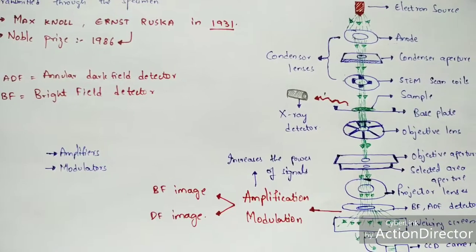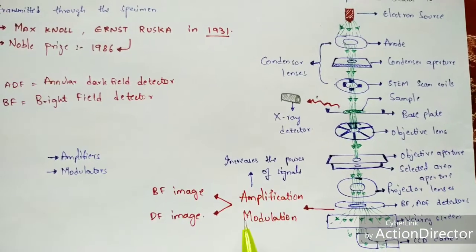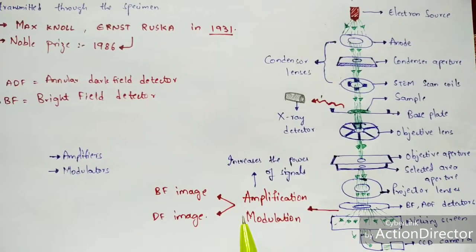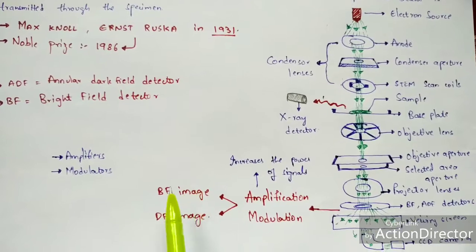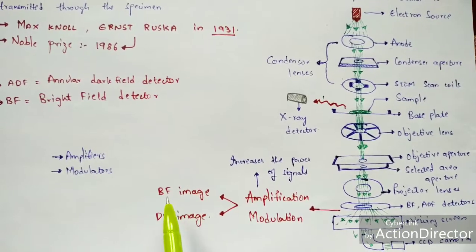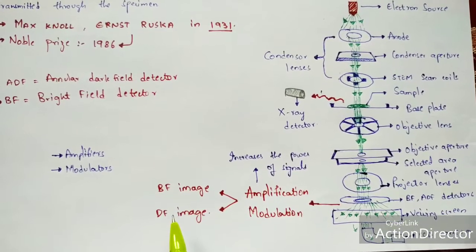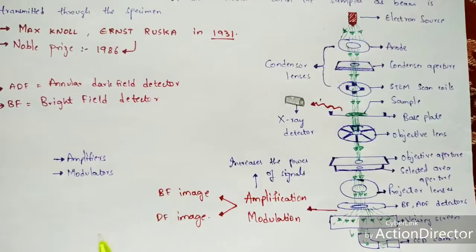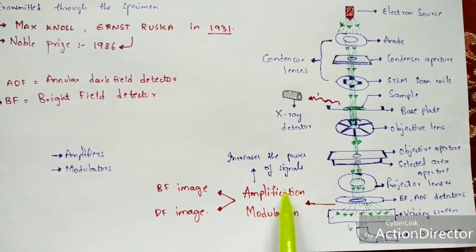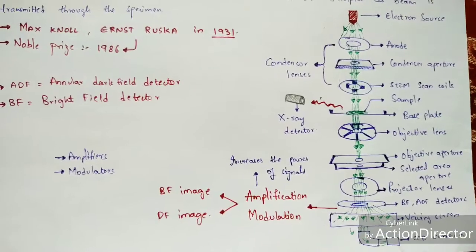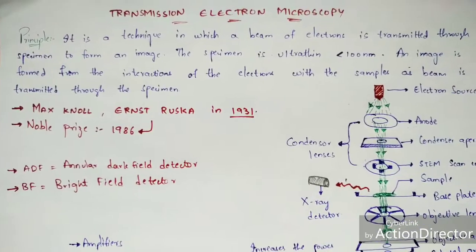By the process of amplification and modulation, a BF image and a DF image are formed. BF image is the bright field image and DF image is the dark field image. Both images can be formed through the amplification and modulation process.